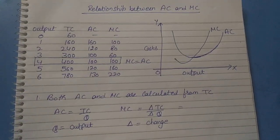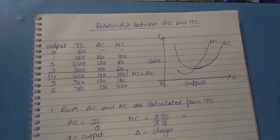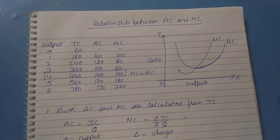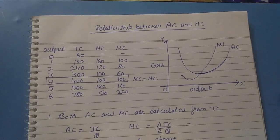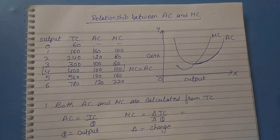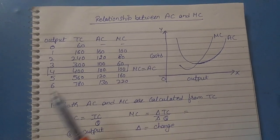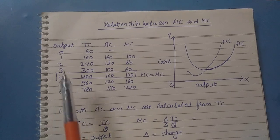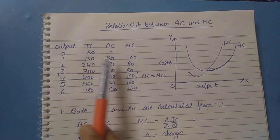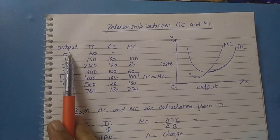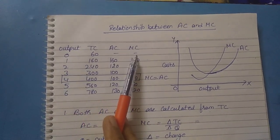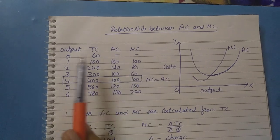Hello everyone, today's topic is the relationship between AC and MC, i.e. average cost and marginal cost. First of all, we will look at this schedule. We have 4 columns in it: output, total cost, average cost, and marginal cost.